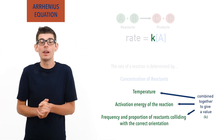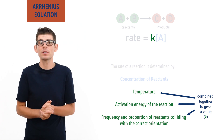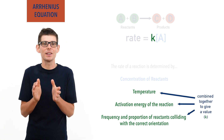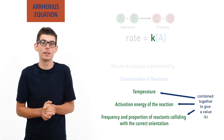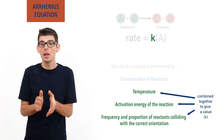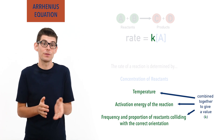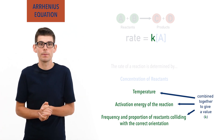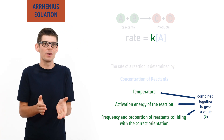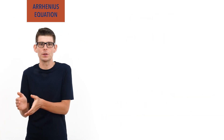Well, luckily for us, some very clever scientists have beaten us to this, and one in particular called Arrhenius produced an equation that enables us to calculate this value k. We call this equation, rather unsurprisingly, the Arrhenius equation.